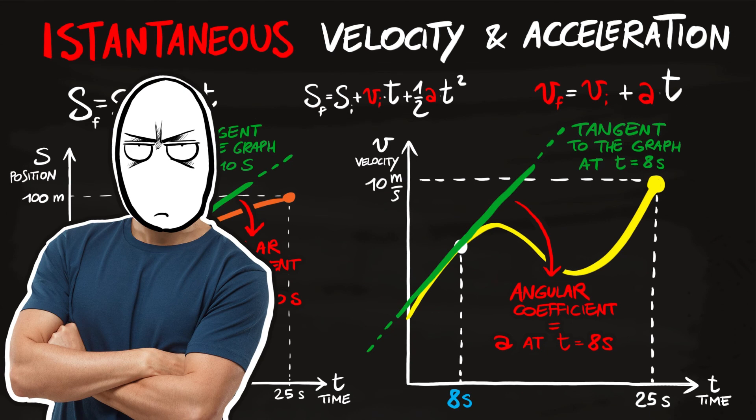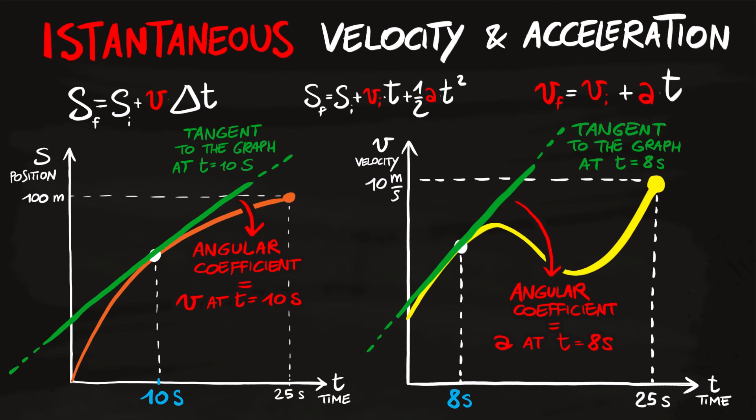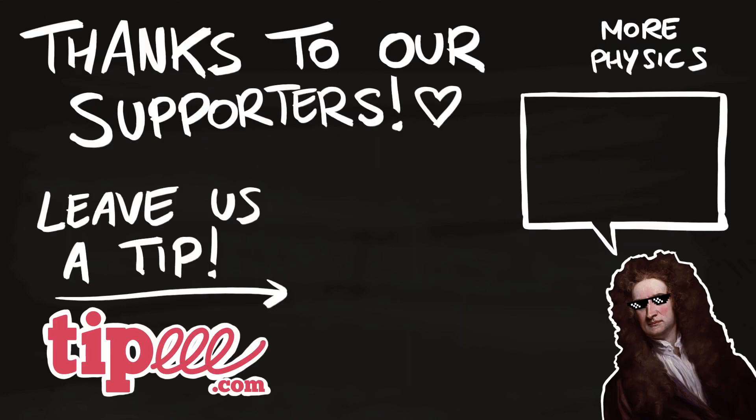You don't need superpowers to read a graph — you don't have to calculate exact numbers just by looking. This method is just to give you an idea of what kind of motion you're dealing with and what the acceleration and velocity could be. Only in very specific situations can you extract actual numerical data from a motion graph.